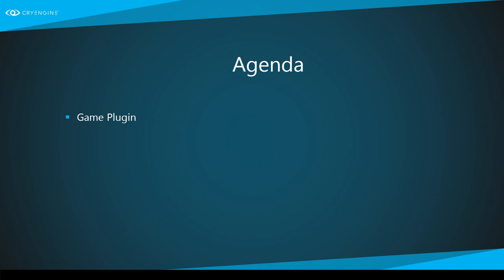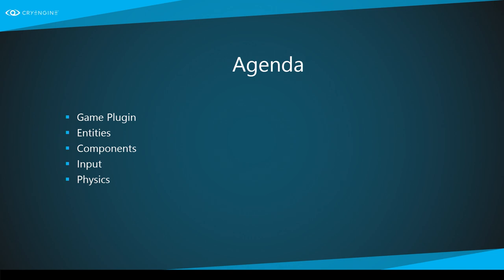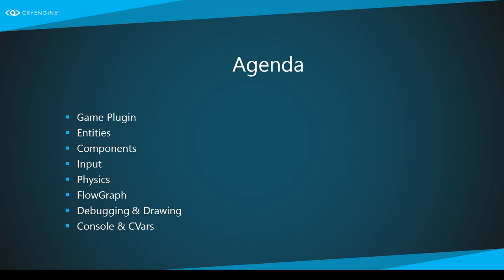First we will cover the game plugin, which is the starting point of our game where you can start to program. We will cover entities because they're the core part of game programming and anything in the world in CryEngine. Then we will cover components and how you can compose entities with components and build logic. Then input — how you get input from the engine — then physics: simulating objects, triggering specific things, applying impulses. We'll cover flow graph briefly for writing your own visual scripting nodes, then debugging and debug drawing, and finally console variables and CVARs — how to use the built-in console and expose values to it.